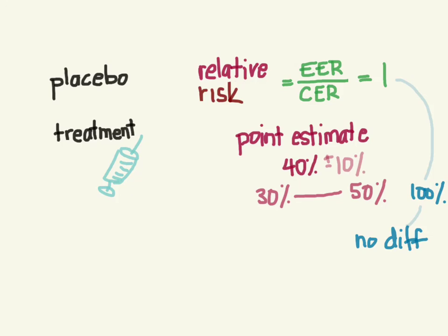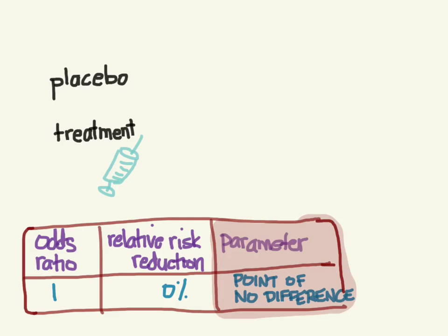The key to understanding confidence intervals is to look at whatever parameter you're examining, find the point of no difference, and then see if the confidence interval crosses that point. That's basically it — please put any questions in the comments. Thanks and bye.